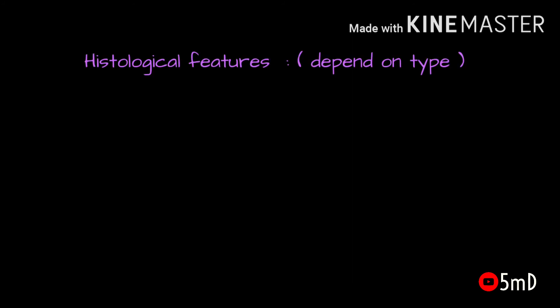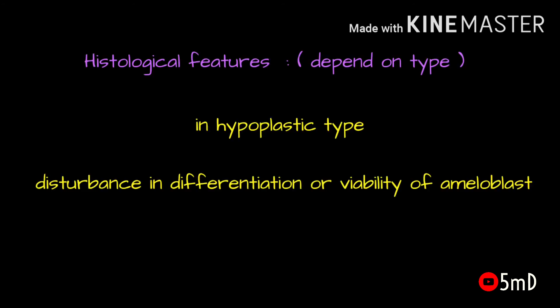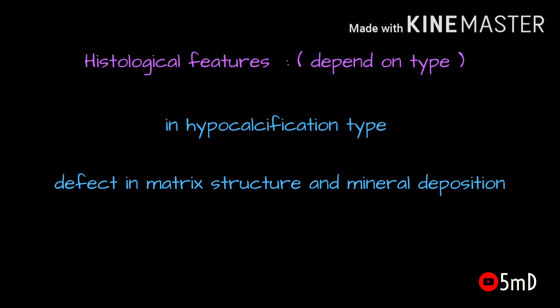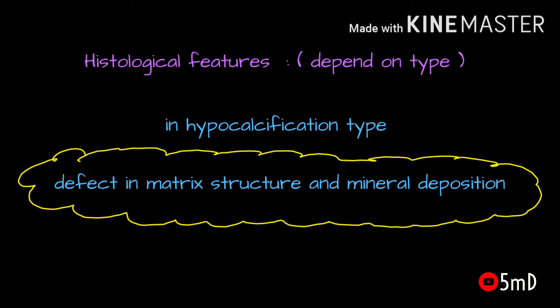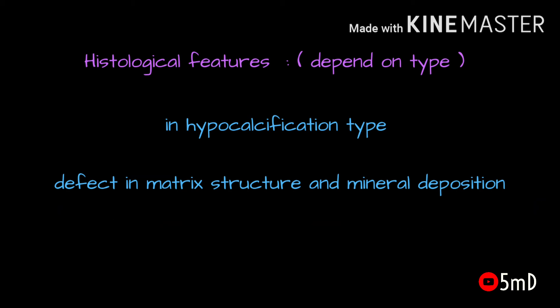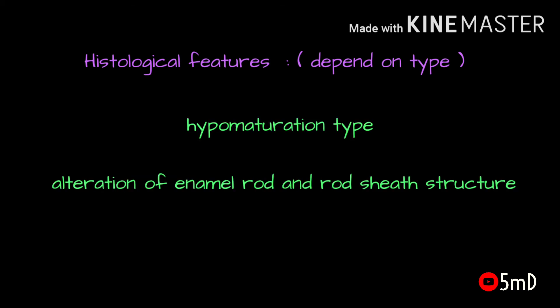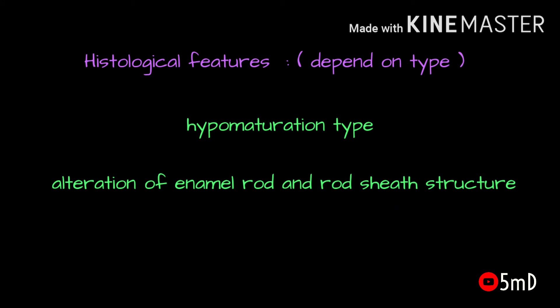Histological features depend on the type of amelogenesis imperfecta. In the hypoplastic type, there is a disturbance in the differentiation or viability of ameloblasts. In the hypocalcification type, there are defects in the matrix structure and in mineral deposition. Finally, in the hypomature type, there are alterations in the enamel rod and rod sheath structures.